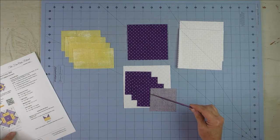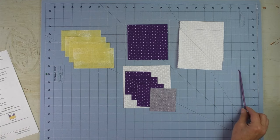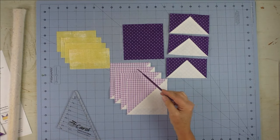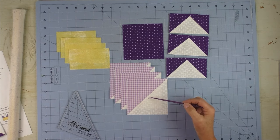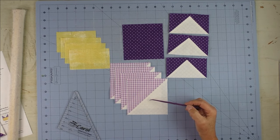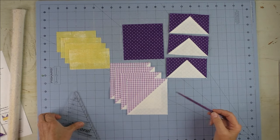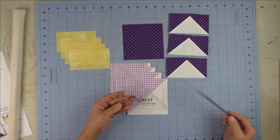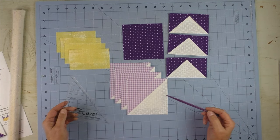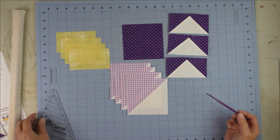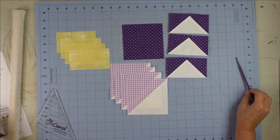Now let's go piece the flying geese and the half square triangles. Here we have the half square triangles pieced and trimmed down to four and a half inches. I use the folded corner clipper ruler to trim those down before I press them. And here are three of the flying geese.